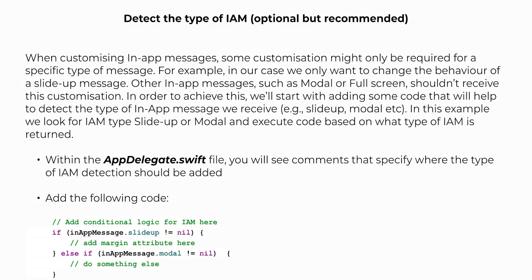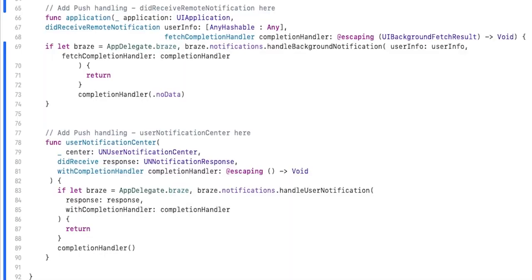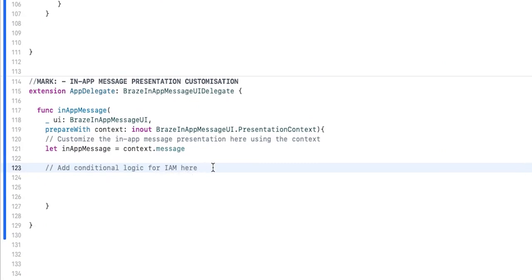When customizing in-app messages, some customization might only be required for a specific type of message. For example, in our case, we only want to change the behavior of a slide up message. Other in-app messages, such as modal or full screen in-app messages, shouldn't receive this customization. In order to achieve this, we'll add some code that will help us detect the type of in-app message we receive — for example, slide up, modal, or others. Within the AppDelegate.swift file, you will see a comment that specifies where the type detection should be added. Look for the comment "add conditional logic for in-app message here".